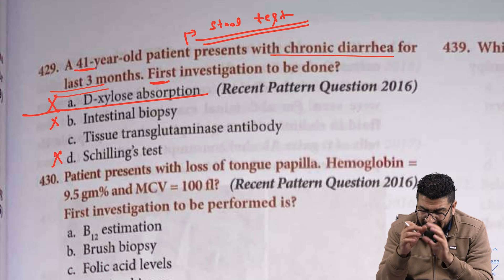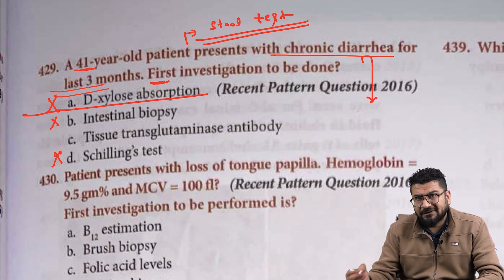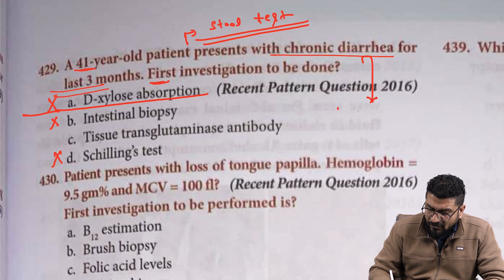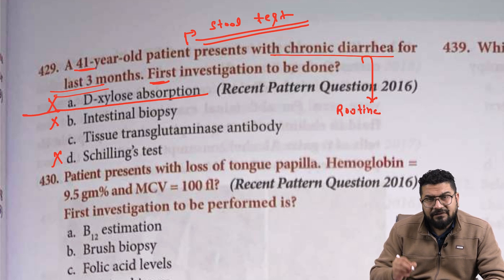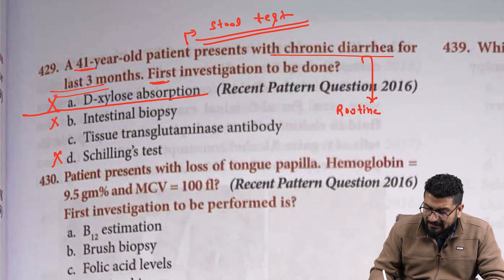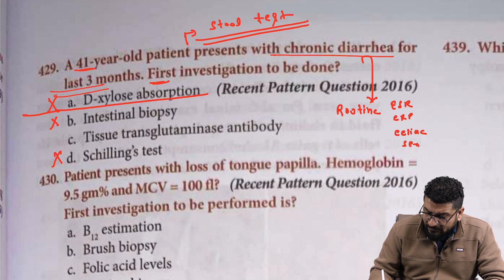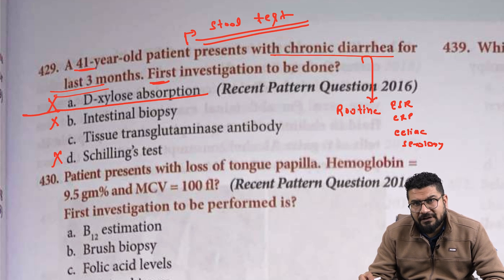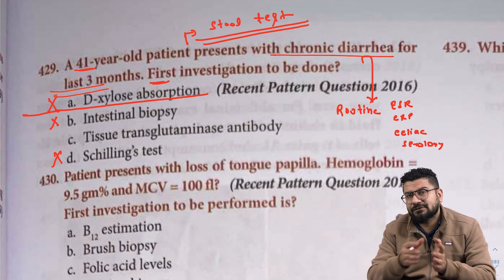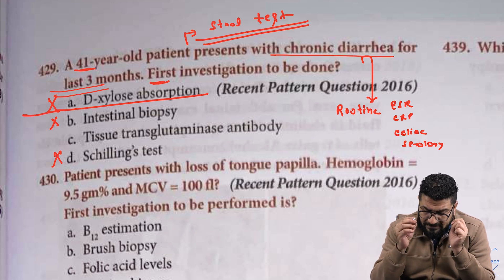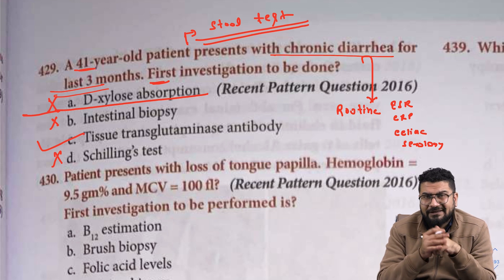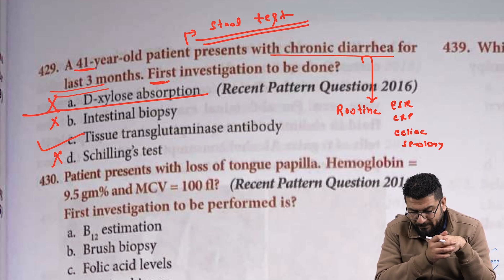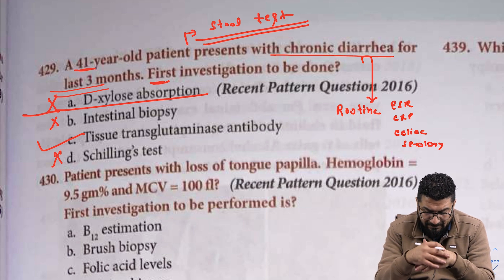They are asking about diarrhea. Whenever you have a patient with chronic diarrhea, we will do routine tests: CBC, LFT, KFT, urine RM, stool test. We will also check ESR, CRP, and celiac serology, because the prevalence of celiac sprue is 1%. Even though many patients are asymptomatic for years, 1% prevalence is huge. So the first investigation is celiac sprue testing — that is TTG. Based on these options, the probable answer is C.